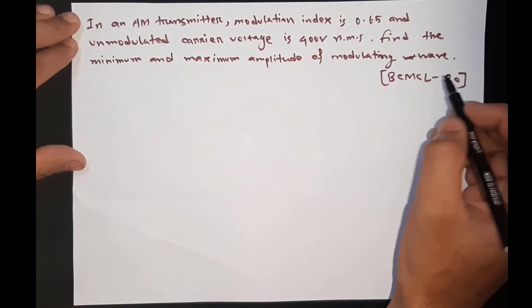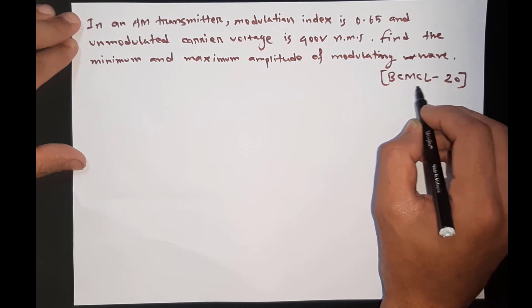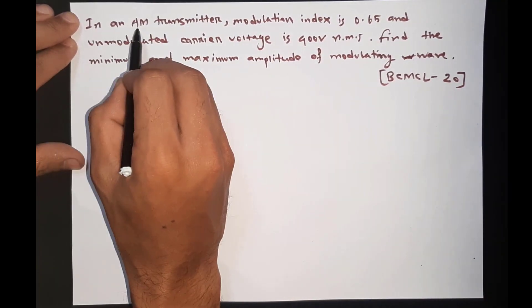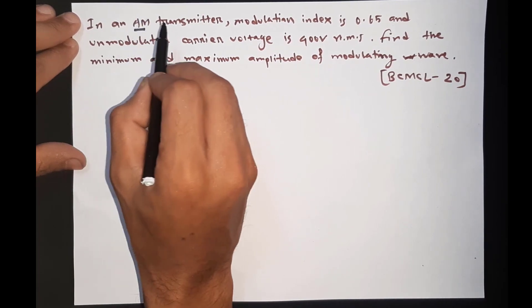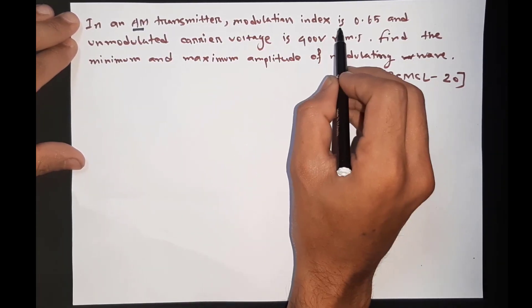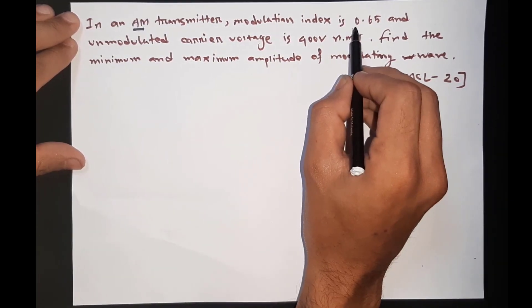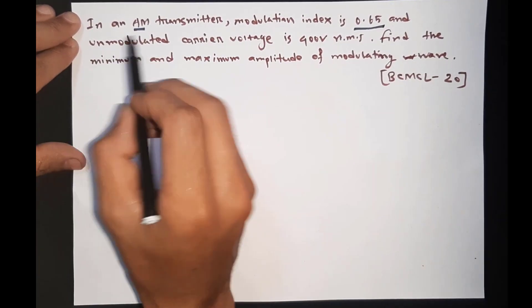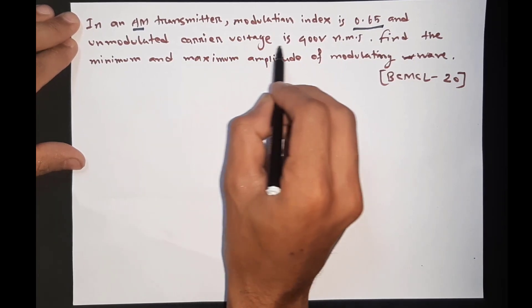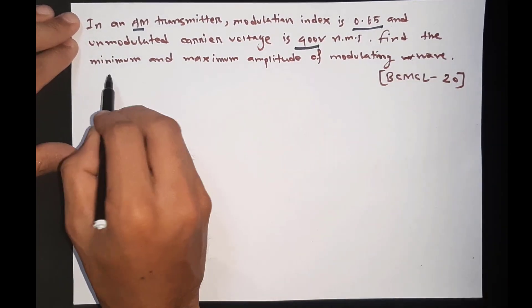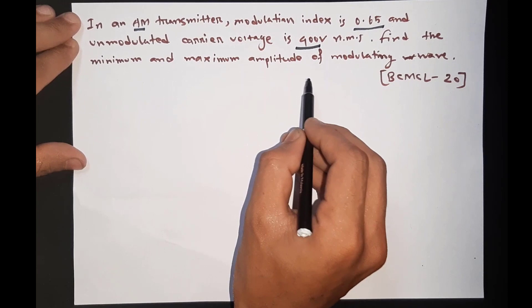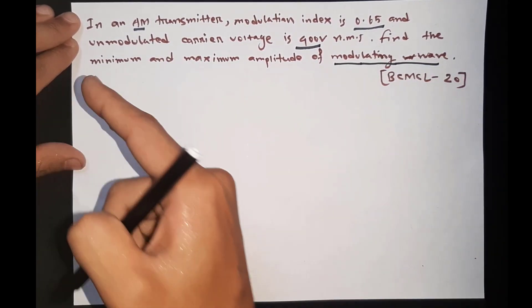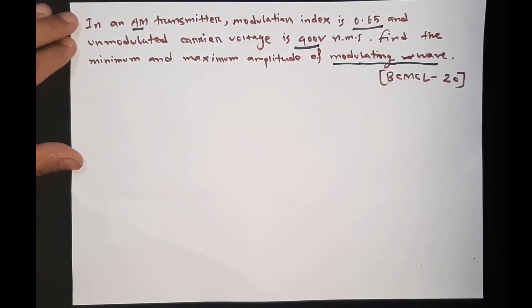This problem is from BCMCL, that means Bangladesh Coal Mining Company Limited. The problem states: in an AM (Amplitude Modulation) Transmitter, the Modulating Index and Unmodulated Carrier Voltage are given. We need to find the Minimum and Maximum Amplitude of the Modulating Wave — that means the maximum and minimum amplitude terms of the modulated wave.